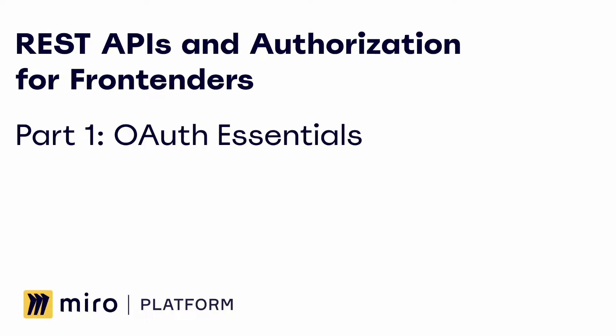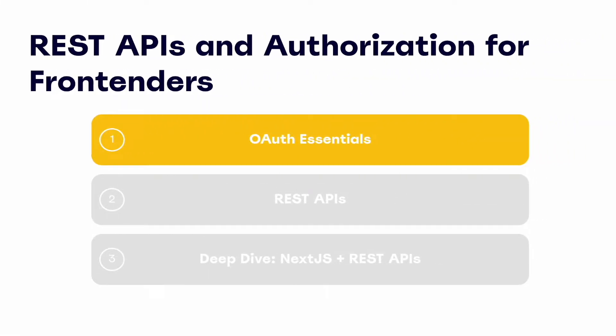Upon completing this module, you'll understand the various OAuth flows, you'll be comfortable with the format of the authorization code grant type, and most importantly, you'll have the knowledge to generate an access token of your own. The next part of this series will build on the OAuth foundation covered here and focus on REST APIs. The final part will then take us into a deep dive of a front-end app, leveraging everything covered in the first two parts.